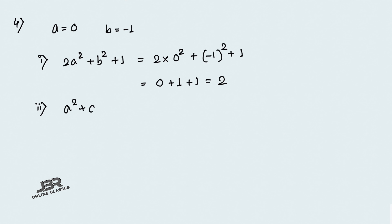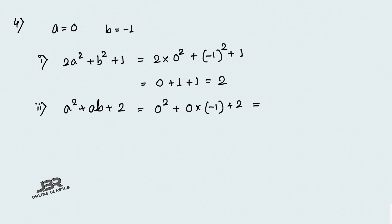Number 2: a² plus ab plus 2. So 0² plus 0 into (minus 1) plus 2. 0 squared is 0, and 0 into minus 1 is 0. So final answer is 2.